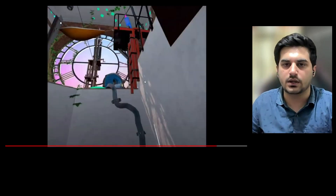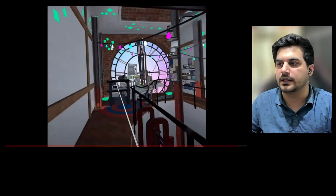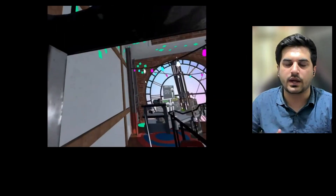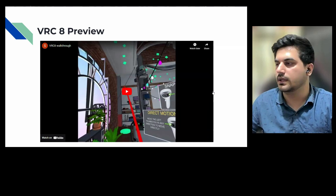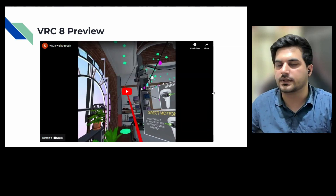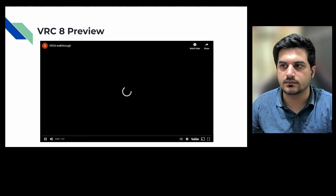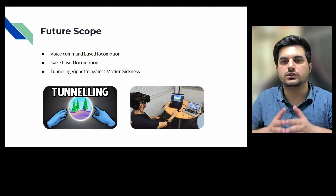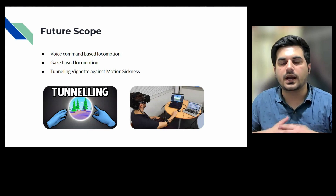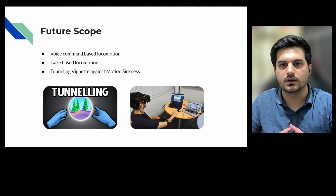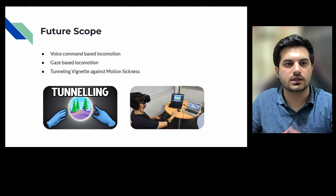This is how we can implement three locomotion styles in virtual reality. Because this is an open-source project, it can be implemented in any game and downloaded via our GitHub project. You can also see our article for all the steps on how to implement it. For future scope, we have implemented the basic Meta Quest VRC 8 criteria — but I'd like to motivate everyone viewing this video on how they can extend these locomotion techniques.